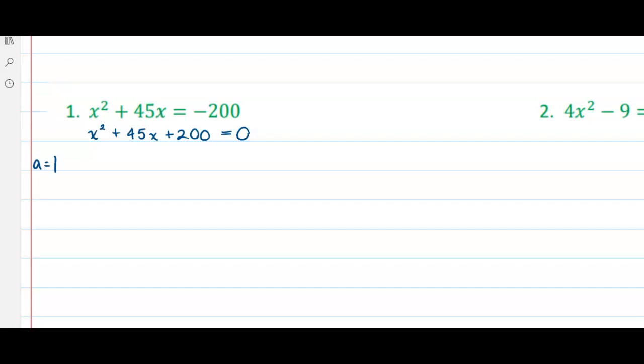a equals 1, b equals 45, c equals 200 in this example. So we're going to go ahead into our formula. Negative b plus or minus the square root of b squared. Get in the habit of putting that in parentheses in case b is negative.